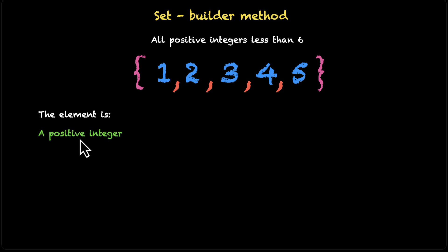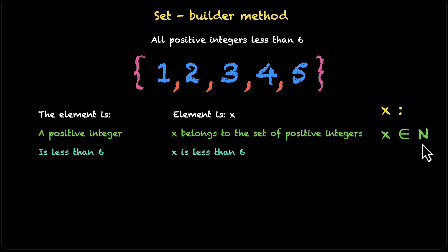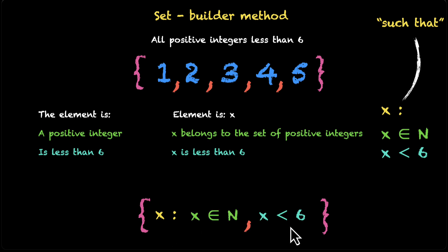So we are looking for the elements that are positive integers and that are less than 6. So if we assume that the element is x, x belongs to the set of positive integers and x is less than 6. In math, this is how you write it: x such that x belongs to natural numbers and x is less than 6. This is the symbol for 'such that'. The way to bring this all together is to have brackets, and within that you have x. So we are looking for all x such that x belongs to natural numbers and x is less than 6 — x is satisfying these two rules together. This is your set builder method: brackets, such that. We have to use all three.